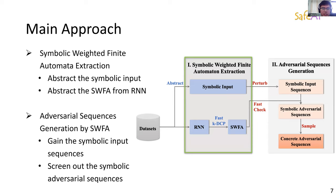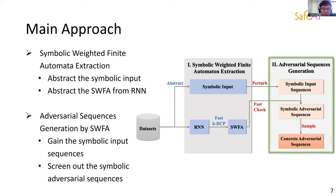Now I will explain our technical roadmap for this paper. Our model has two main parts. The first is symbolic weighted finite automata extraction. We extract SWFA from the trained RNN, which is the crucial part of the approach that constructs the symbolic system. The second part is adversarial sequence generation by SWFA. We perturb the symbolic input to get symbolic sequences and use SWFA to reduce the complexity. We formally analyze the reachability of SWFA to accelerate the generation process and check whether the newly generated symbolic sequence is an adversarial one. If the sequence is judged, we can select concrete ones from symbolic ones by sampling techniques.